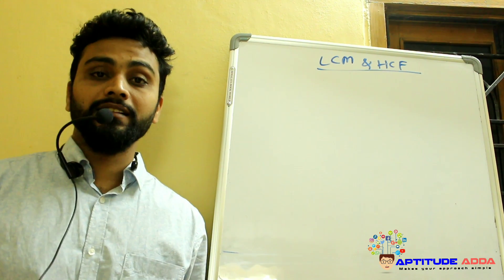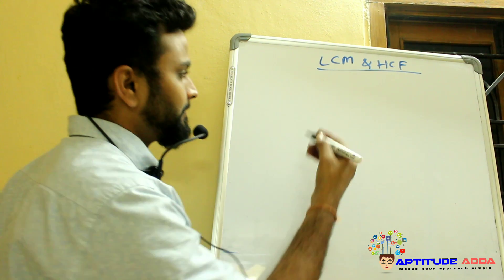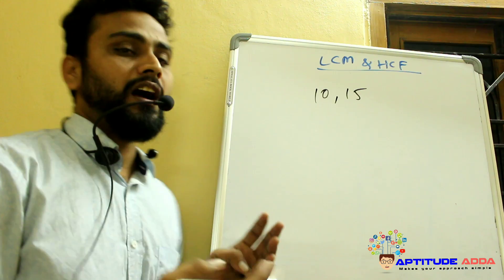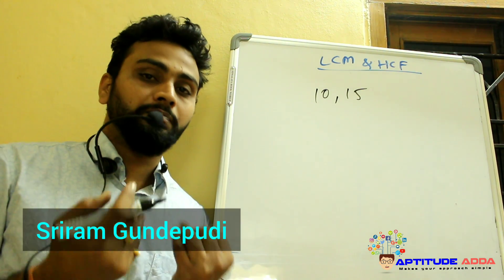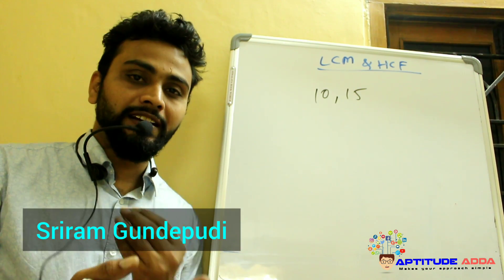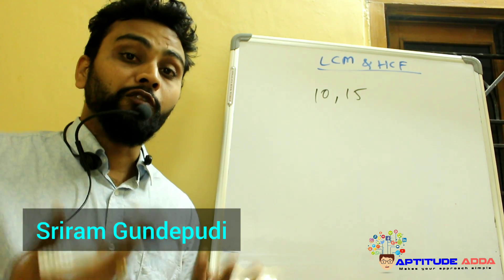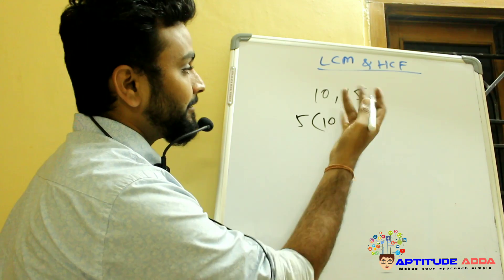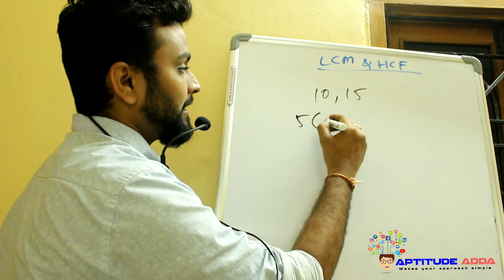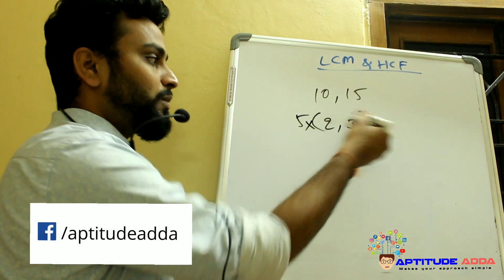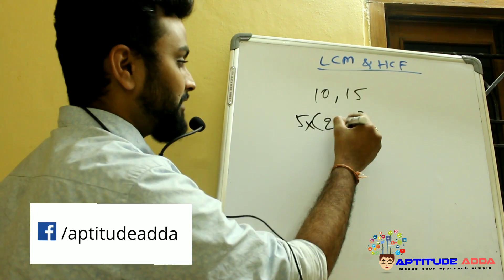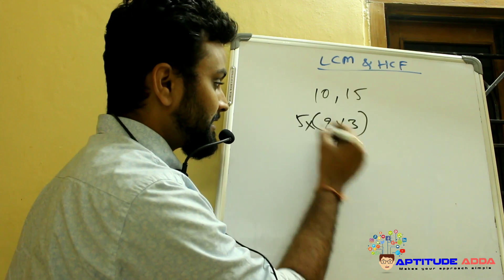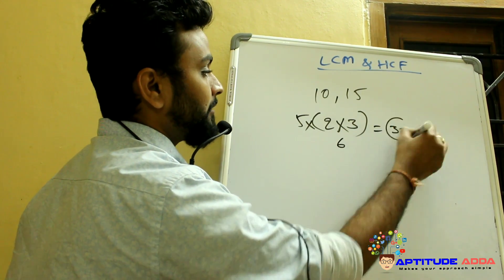We will see some examples on LCM and HCF. Consider two numbers, say 10 and 15. They are not co-primes, not prime numbers, not consecutive odd or even numbers, not even consecutive numbers. So how to find LCM? 5 is common for 10 and 15 — 5 twos are 10, 5 threes are 15. Here 2 and 3 are consecutive numbers, so their product gives LCM: 3 into 2 equals 6, 6 into 5 gives 30. So 30 is LCM of 10 and 15.